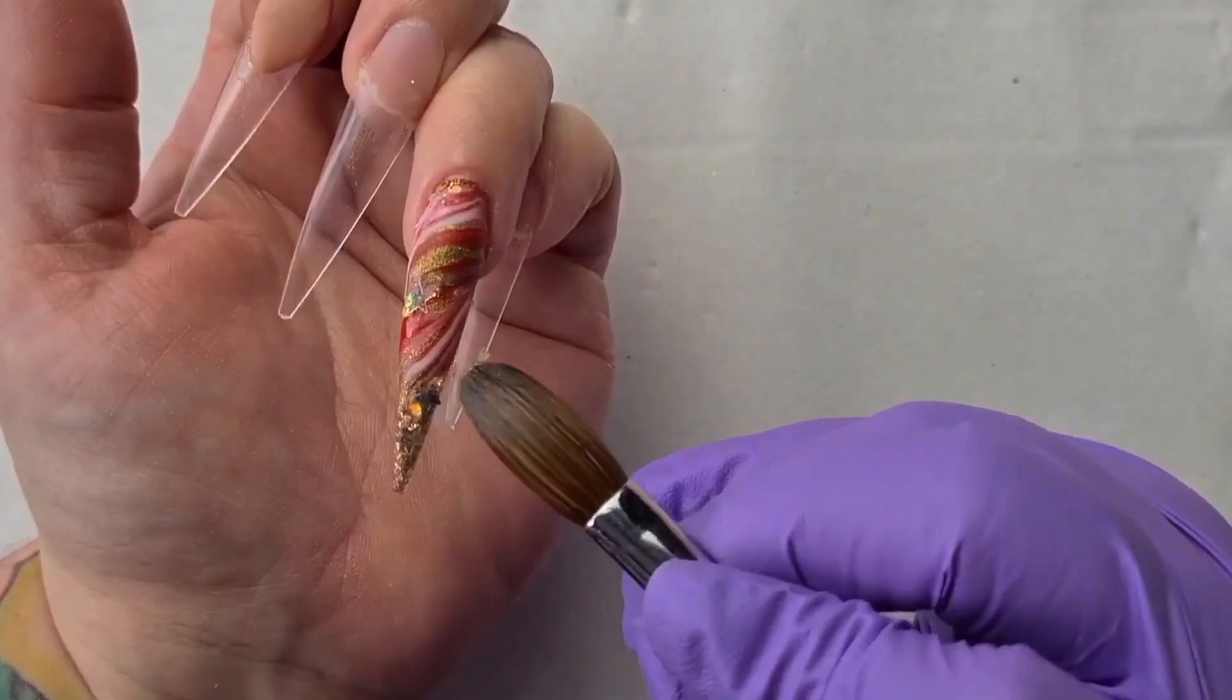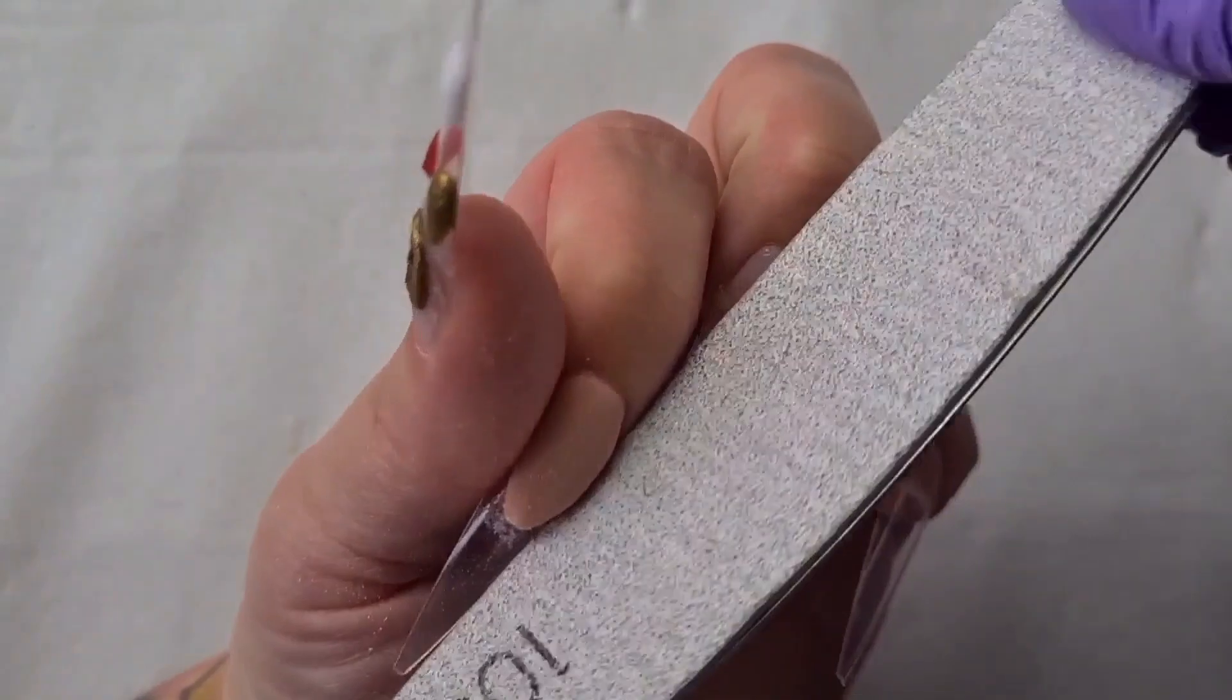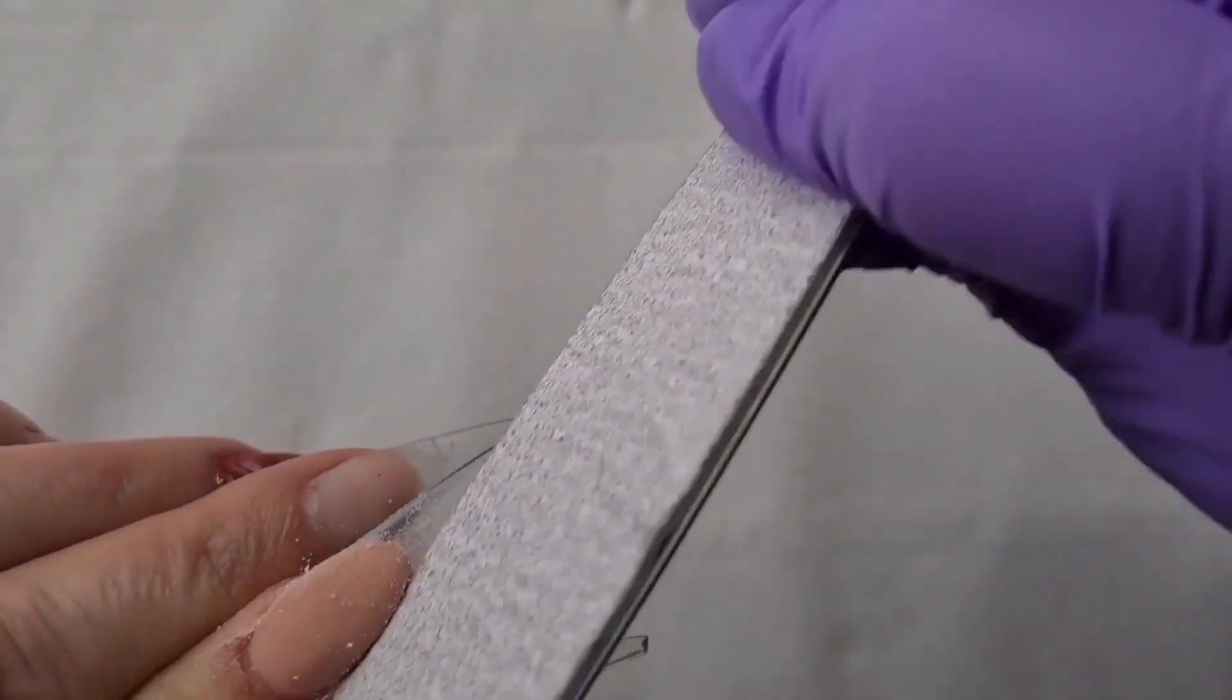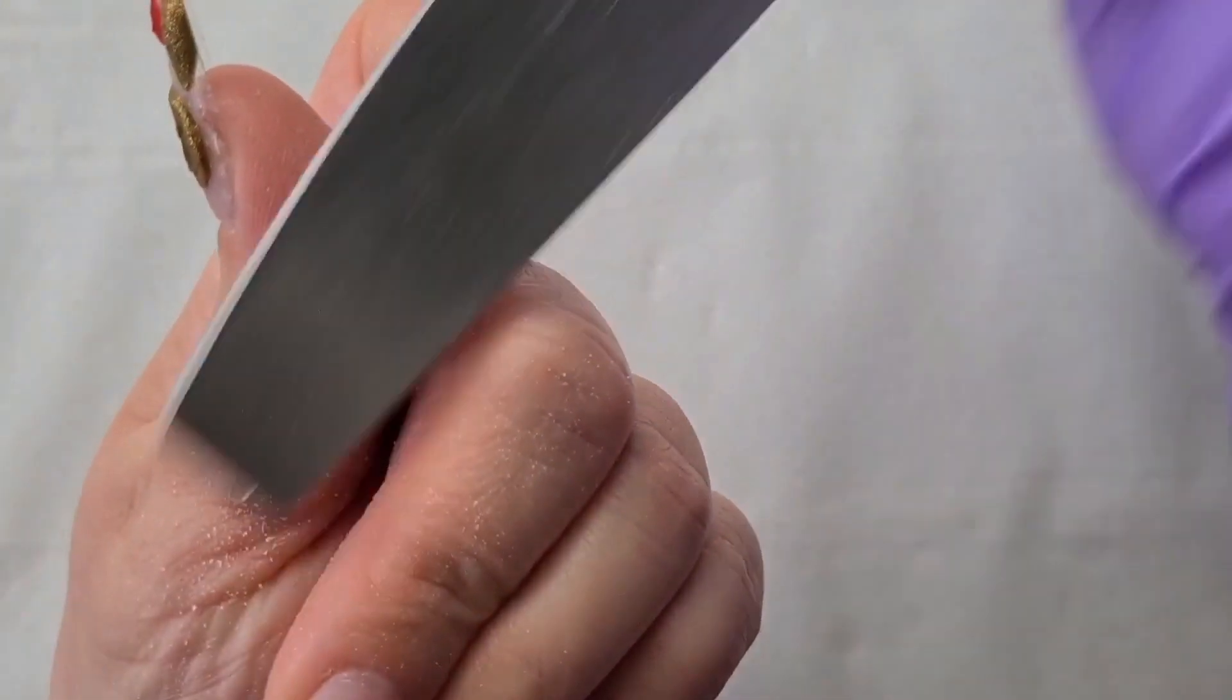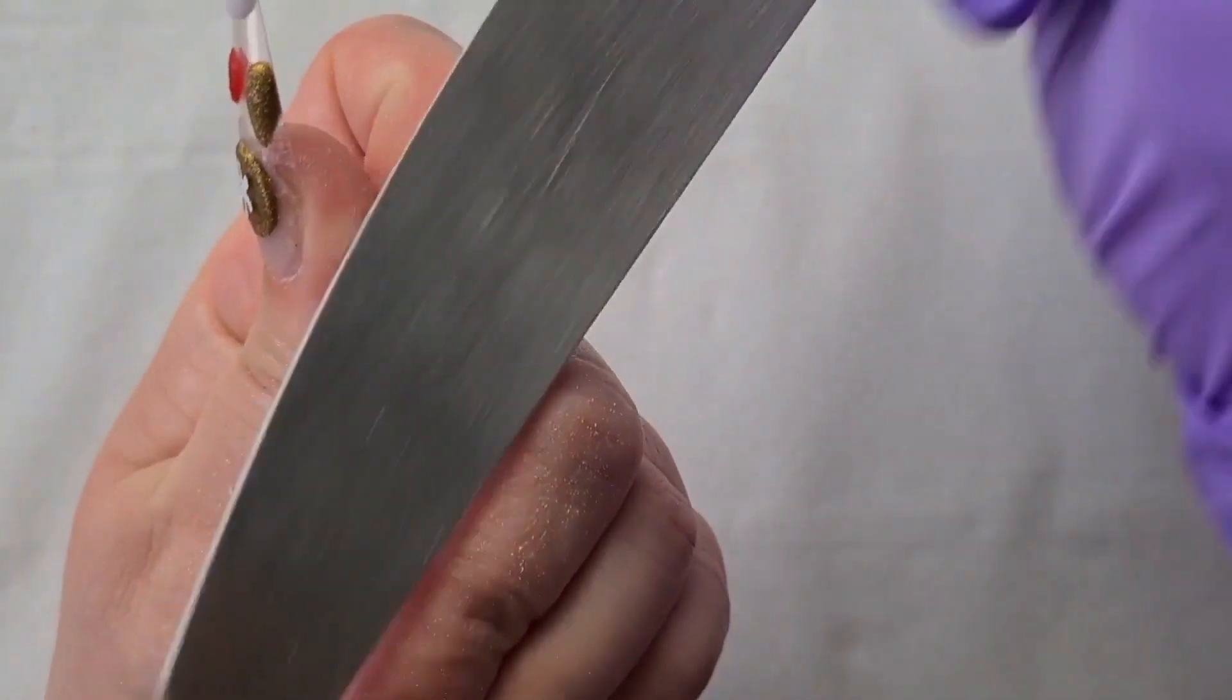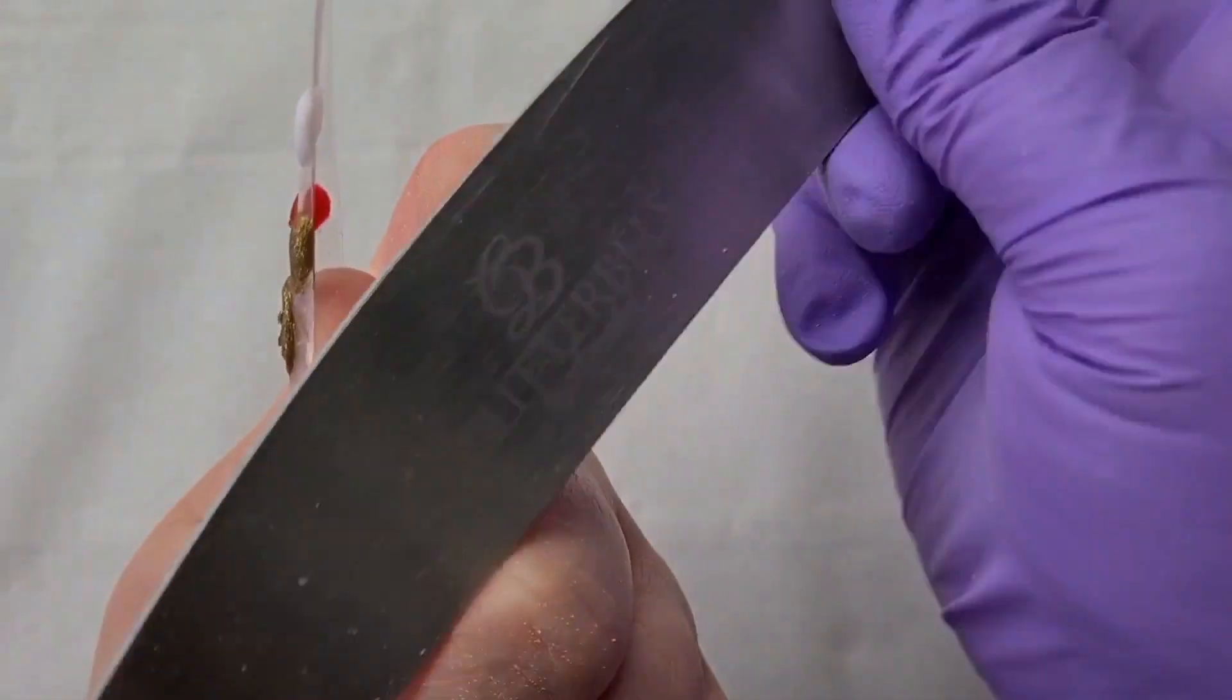And now I'm adding glitter and some stars as well. I'm using my metal file to create a nice deep smile line and I'm making sure two sides are similar or actually the same. Don't worry because when you apply this you can always go back and file it down.